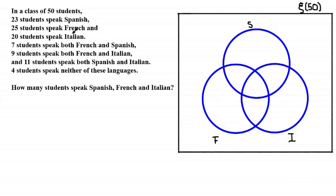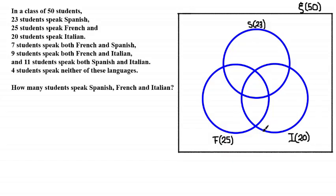We're told 23 students speak Spanish, so we write 23 next to S. 25 students speak French, so we write 25 next to F. And 20 students speak Italian, so there should be 20 students inside that set.